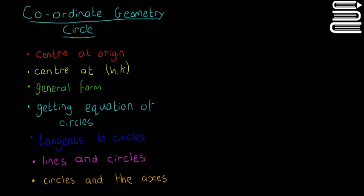We look at tangents to circles and the different kinds of questions we can get on that. Then lines and circles—things about lines crossing circles. And circles and the axes: circles that are touching the axis or that intersect the axis and questions like that.